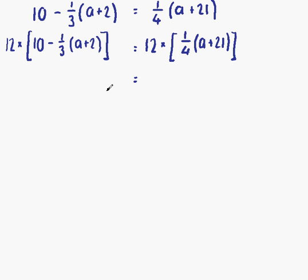What we want to do now is multiply through by 12. First of all, 12 times 10 is 120. Then put our minus sign down. 12 times 1 third a plus 2. Well, that gives us 12 thirds a plus 2.